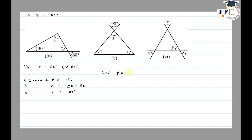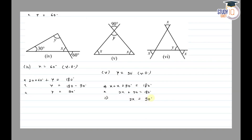For question 5, y is equal to 90 degrees by vertical opposite angles. Using the sum of all interior angles, x plus x plus 90 is equal to 180 degrees, so 2x is equal to 90 degrees, and x is equal to 90 divided by 2, so x is equal to 45 degrees.